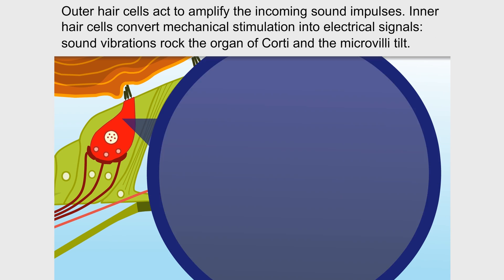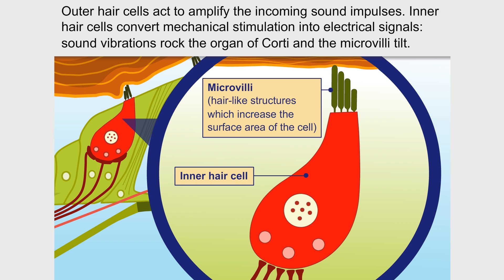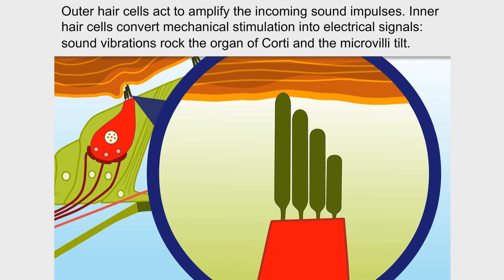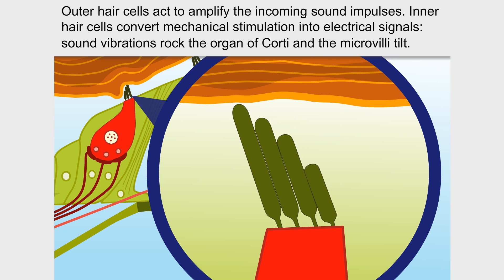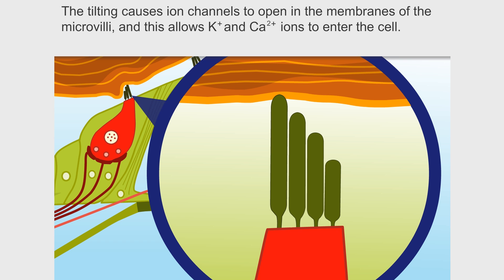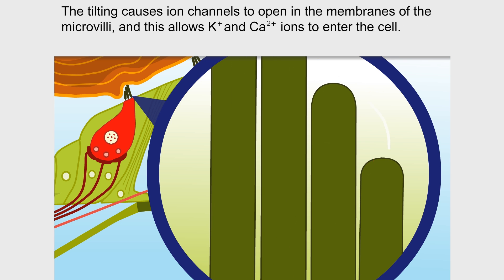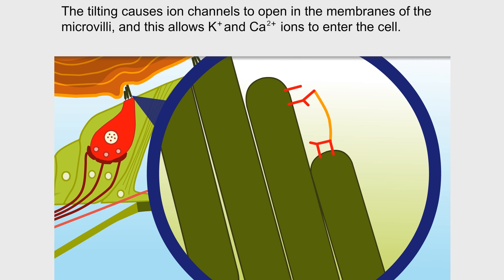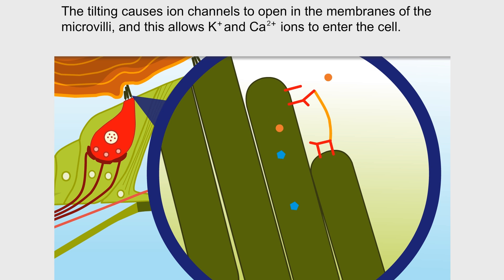Outer hair cells act to amplify the incoming sound impulses. Inner hair cells convert mechanical stimulation into electrical signals. Sound vibrations rock the organ of corti and the microvilli tilt. The tilting causes ion channels to open in the membranes of the microvilli, and this allows potassium and calcium ions to enter the cell.